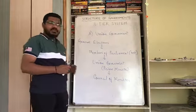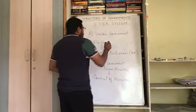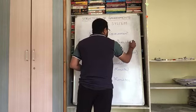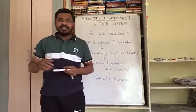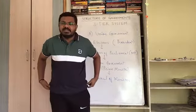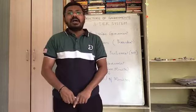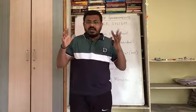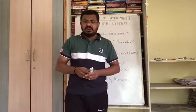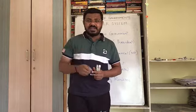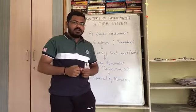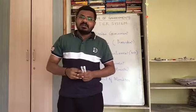In the union government, the role of the president is very significant. While the prime minister is the head of the government, the entire functioning is under the supervision of the president. The president plays a very important role in the central or union government. This is the first tier of government, at the top level.